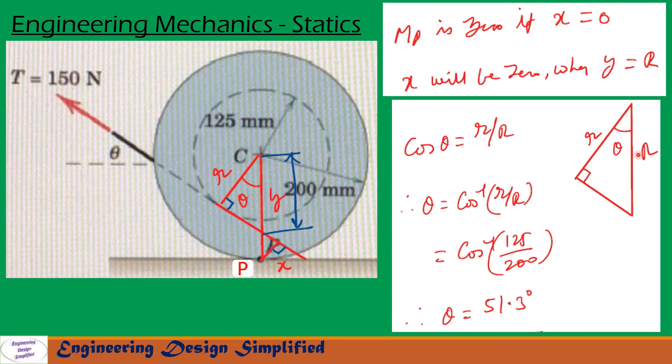Here we have this distance r. This is capital R and the angle is theta. From this right angle triangle we can write cos theta equal to small r by capital R. So after substituting the values of small r and capital R we can get theta equal to 51.3 degrees. When this angle theta is 51.3 degrees, then moment due to this force about this point will be zero.